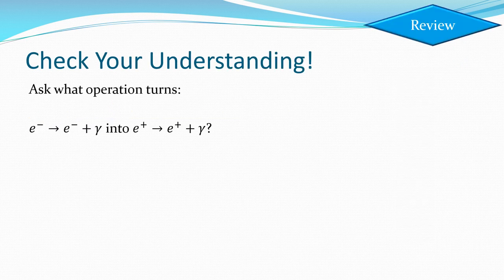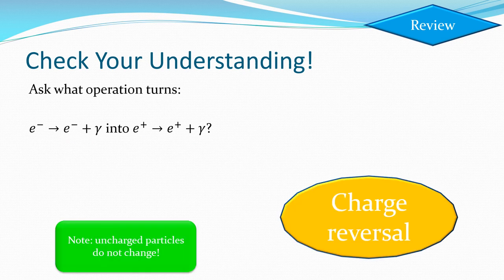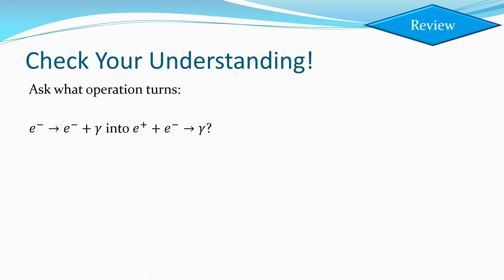You can check your understanding here. What operation turns this one into this one? Pause the video. Have a look. What have I changed about those two to make it occur? This is the charge reversal symmetry. I turned this into its antiparticle over here and I turned this one into its antiparticle over there. And obviously that is its own antiparticle but it didn't move. Unchanged particles haven't really changed because I'm talking about charge reversal.